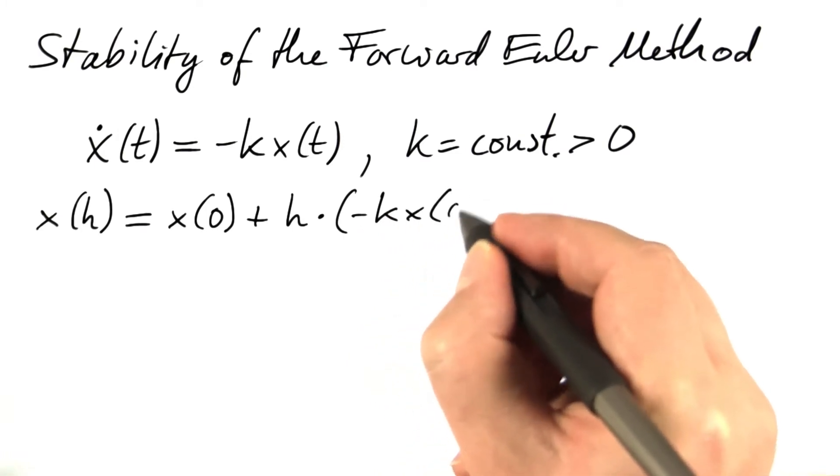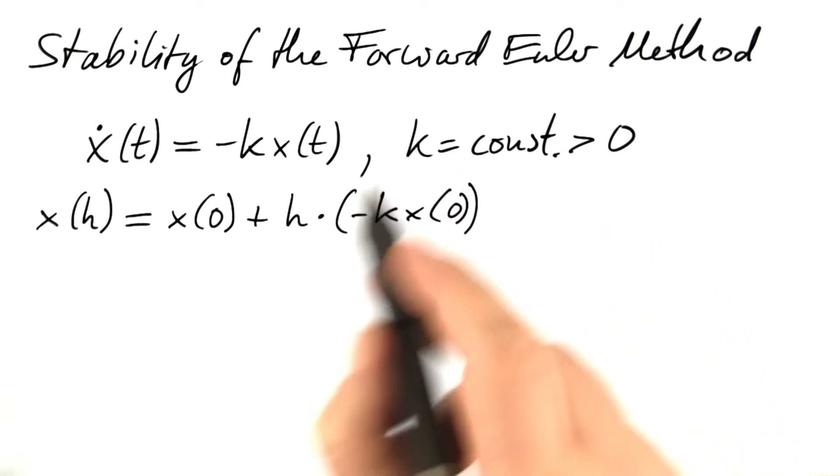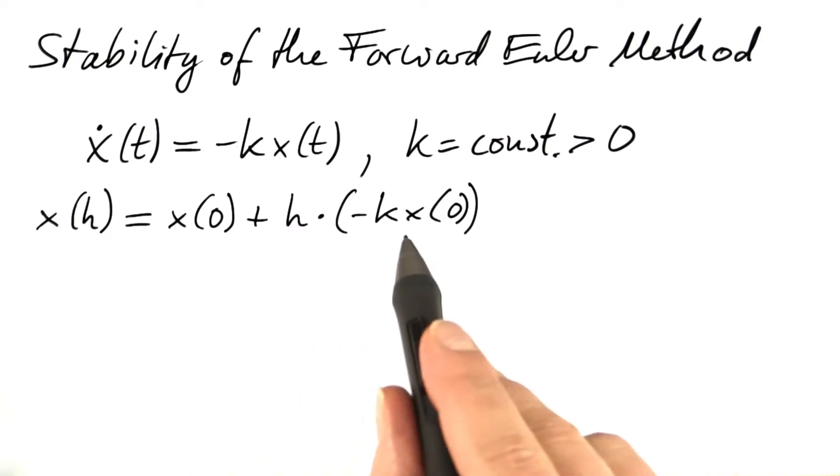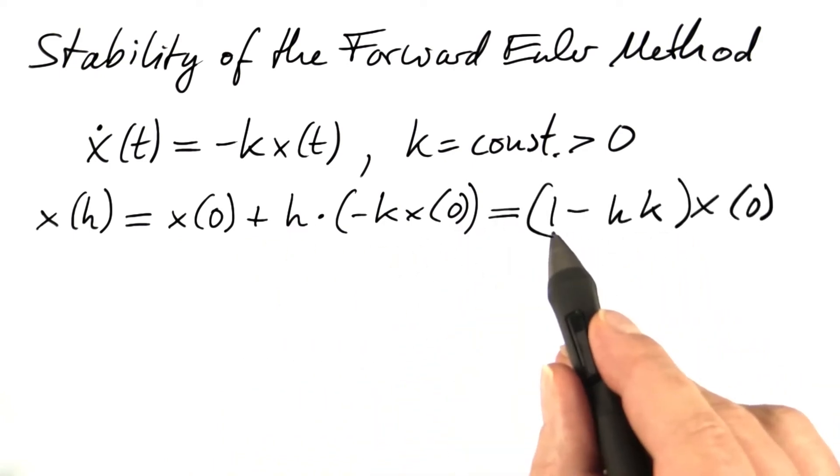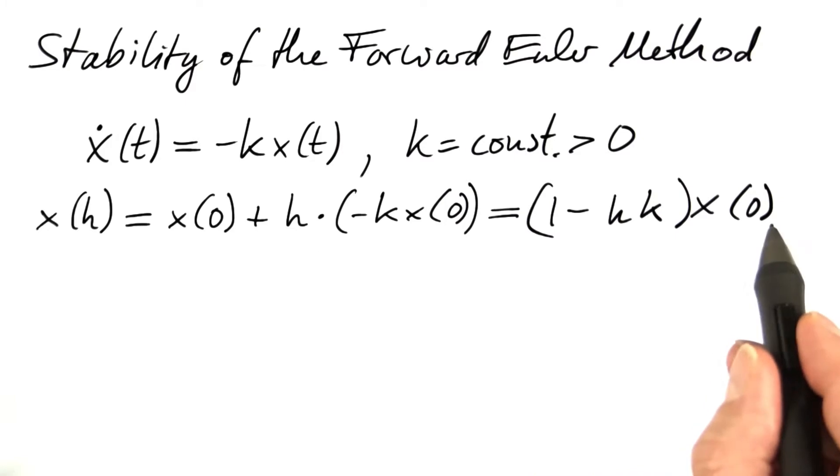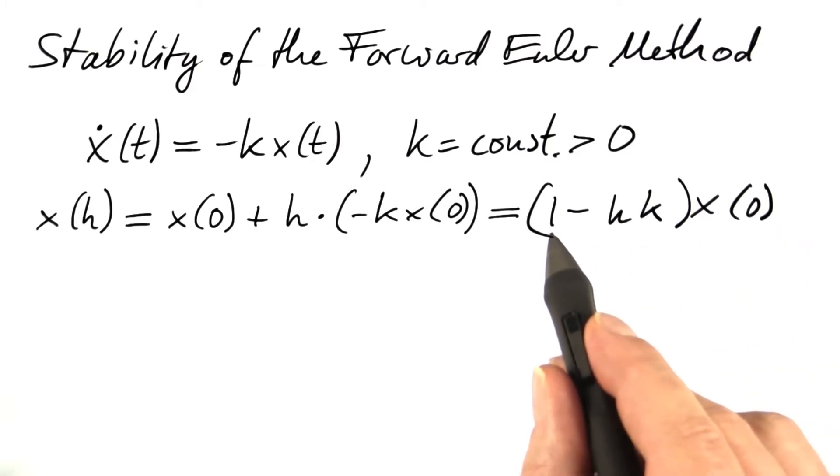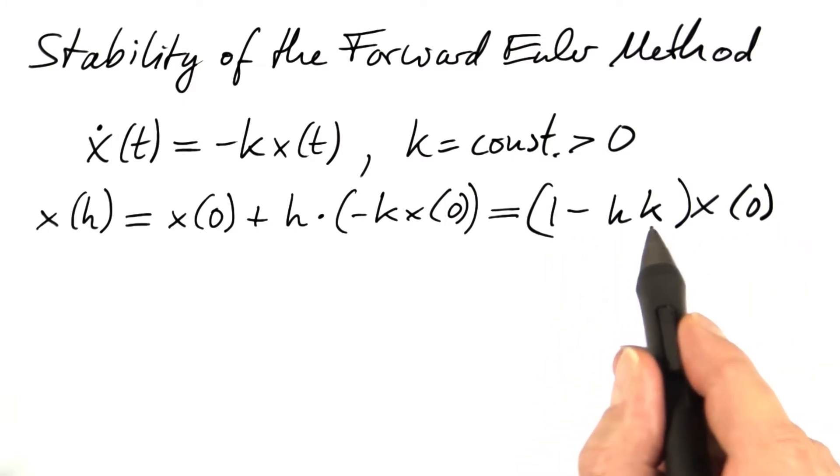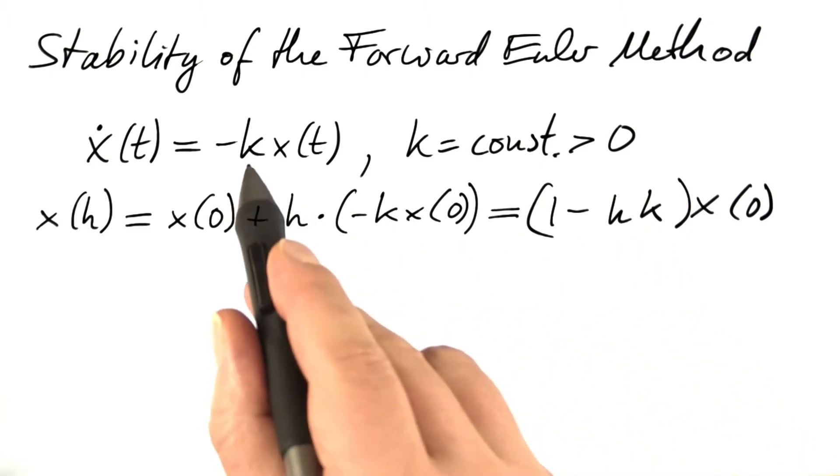What's the rate of change at time zero? It's minus k x of zero. We can factor out x of zero and end up with this expression. That's the result after the first time step. The initial value gets multiplied by 1 minus step size times the constant that appears in the test equation.